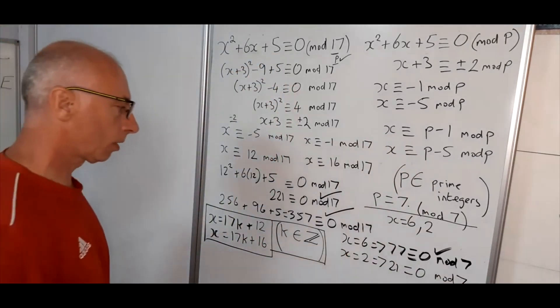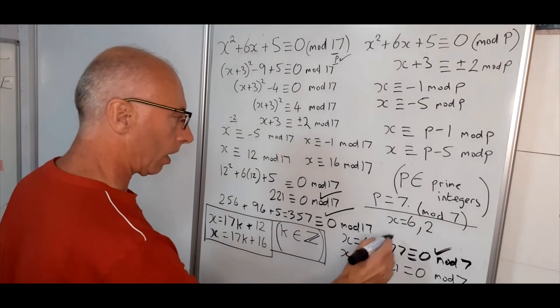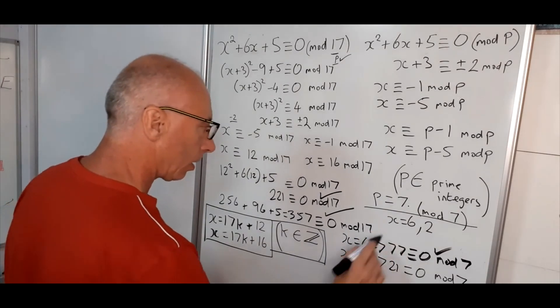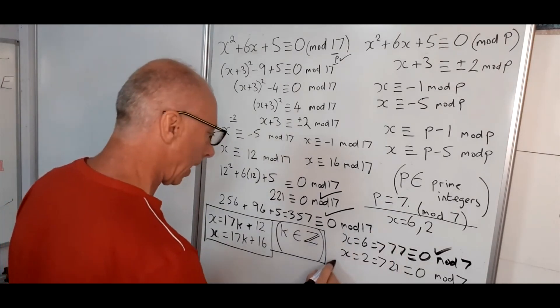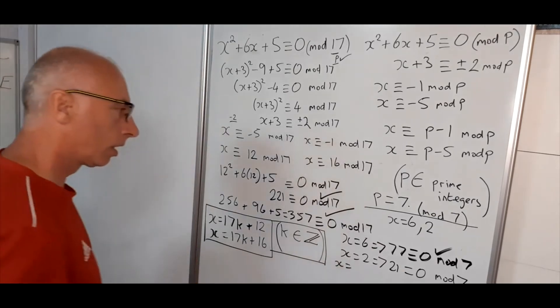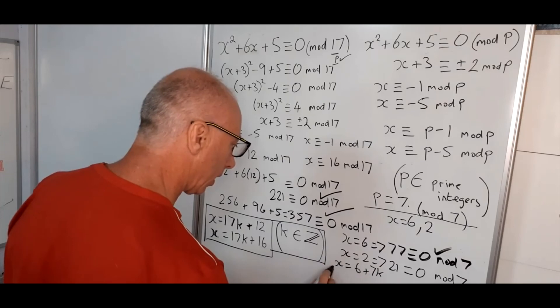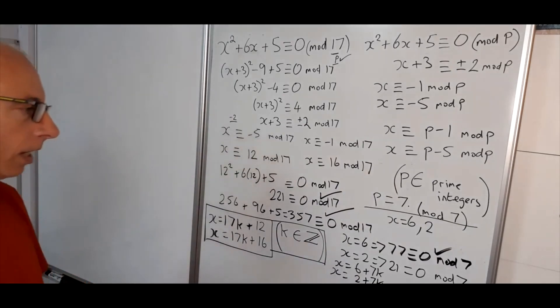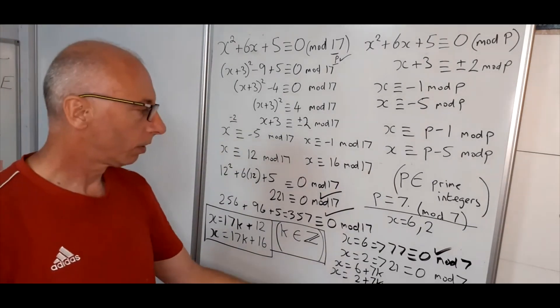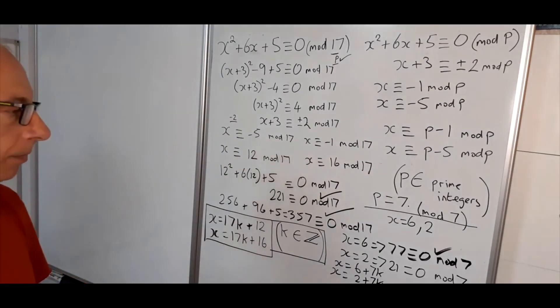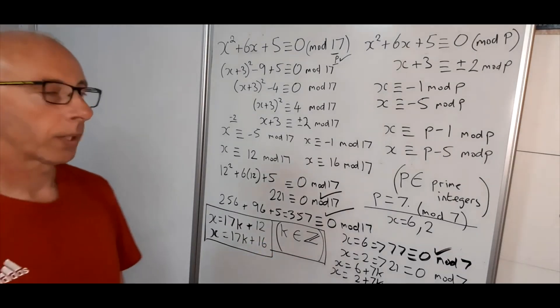So for this one, we'll just say our case here, we've got x equals 6 plus 7k and x equals 2 plus 7k. And that's our general solution for when we're going to plug in for the modulus of 7, i.e. prime number 7. Okay.